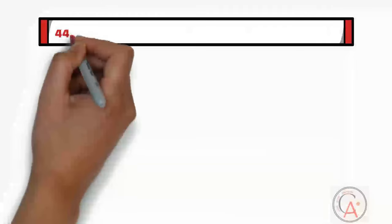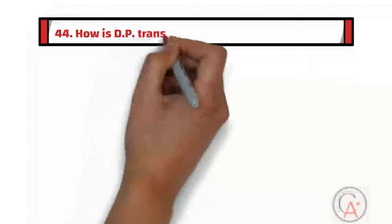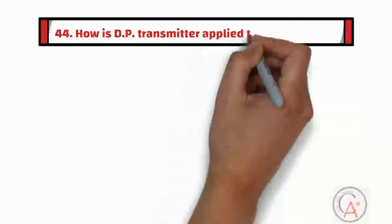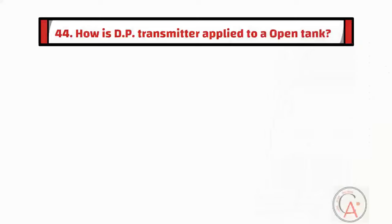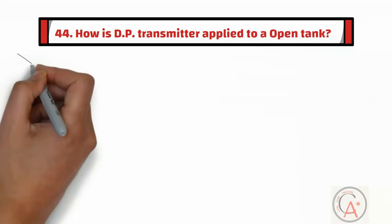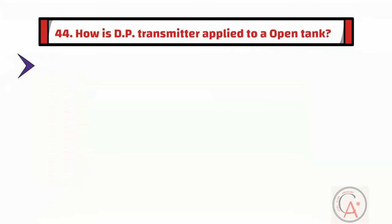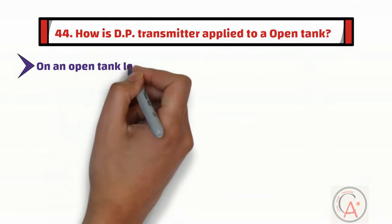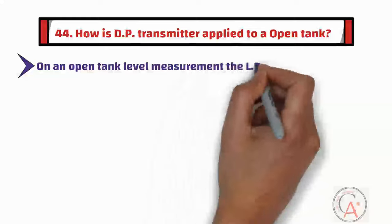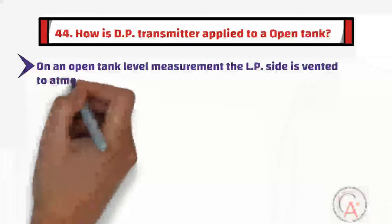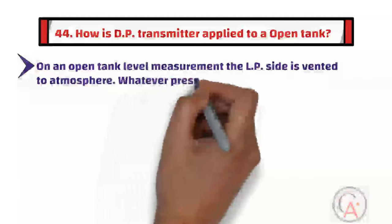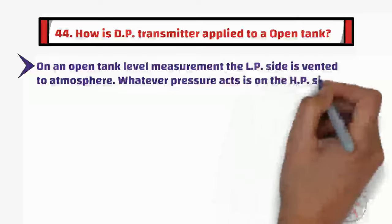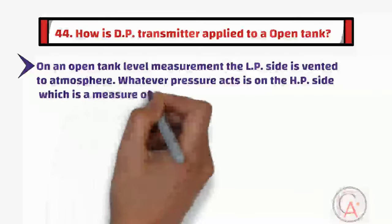Question forty-four is: how is a DP transmitter applied to an open tank? In an open tank level measurement, the LP side is vented to the atmosphere. Whatever pressure acts on the HP side is a measure of level.